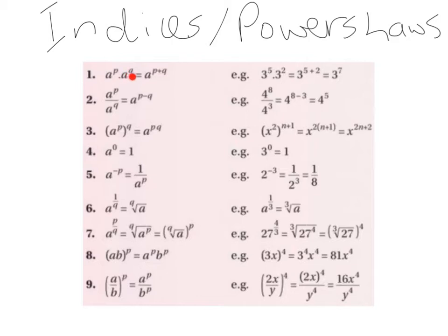So basically, if we are multiplying and we have the bases to be the same, we just add the powers. An example of that would be 3 to the power of 5 multiplied by 3 to the power of 2. Since the bases are the same — we have both 3's — we add the powers. So 5 plus 2 makes 7, giving us 3 to the power of 7.